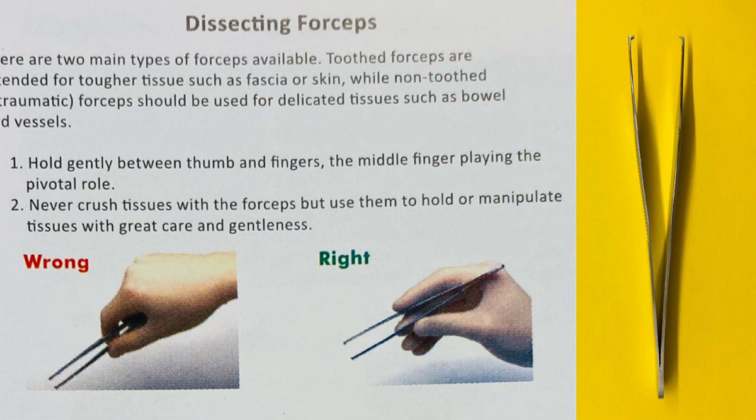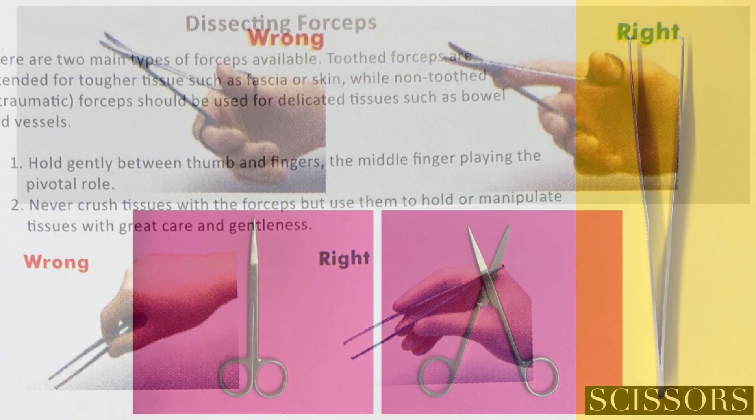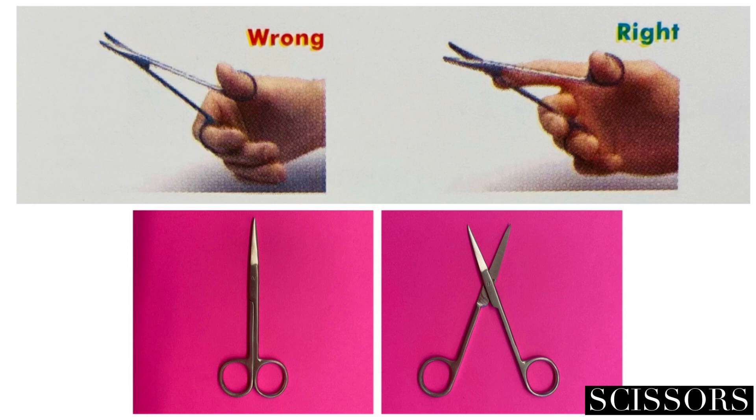Now pick up your forceps and make sure you're holding them correctly. Use the image to help. Now do the same thing with the scissors, noting where the pointer finger is located.